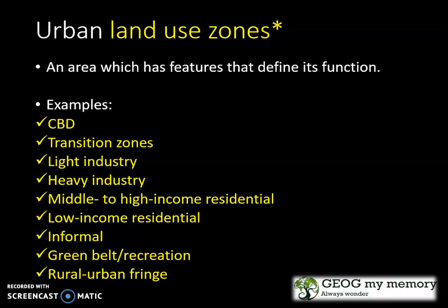Your green belt is where there are no buildings. It is used for public gardens, parks, and sports fields. And lastly, your rural urban fringe, which is a mixed land use area with both rural and urban functions.